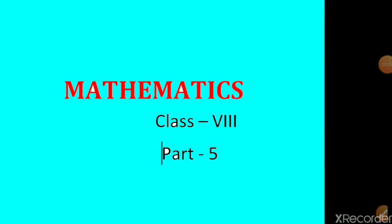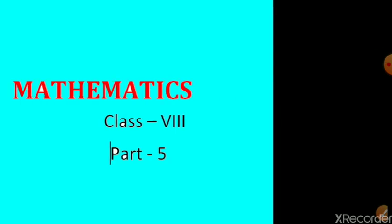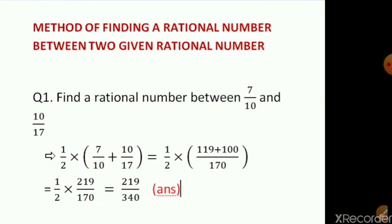In the last part of chapter 1, Rational Numbers, we are going to discuss about the methods of finding rational numbers, or a large number of rational numbers, between two given rational numbers. Let's start with the first method, that is finding a limited number of rational numbers in between two given rational numbers.